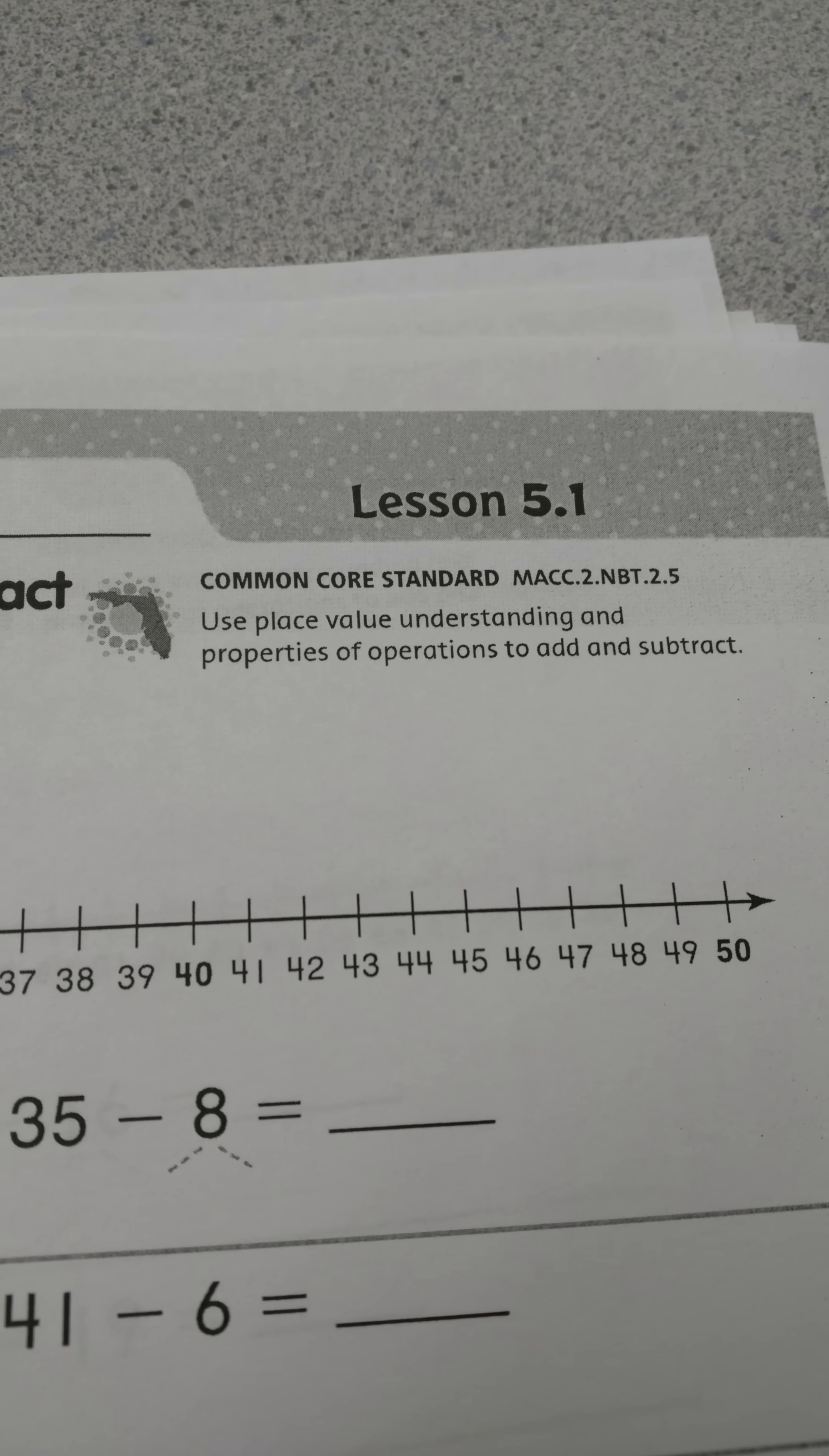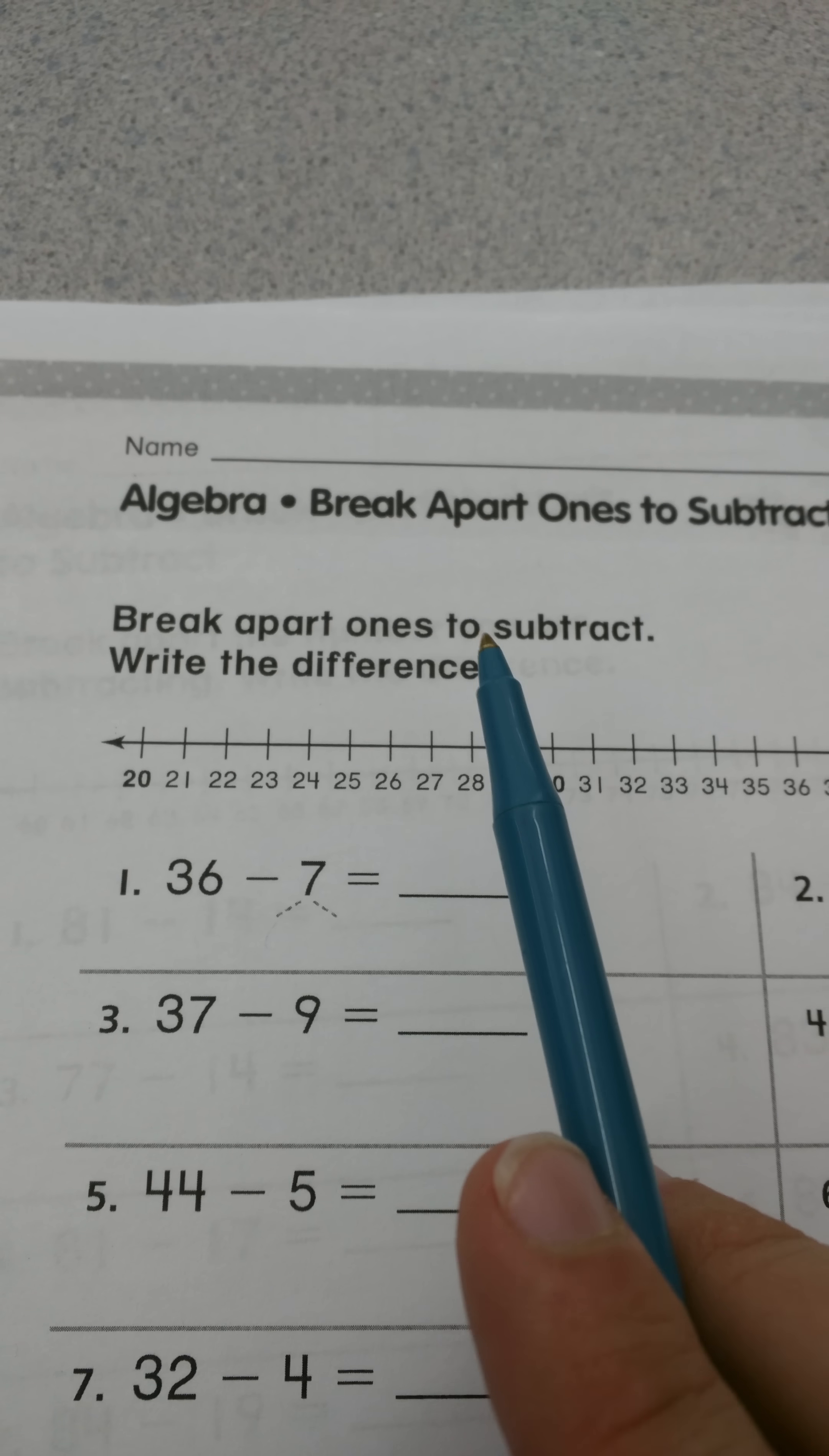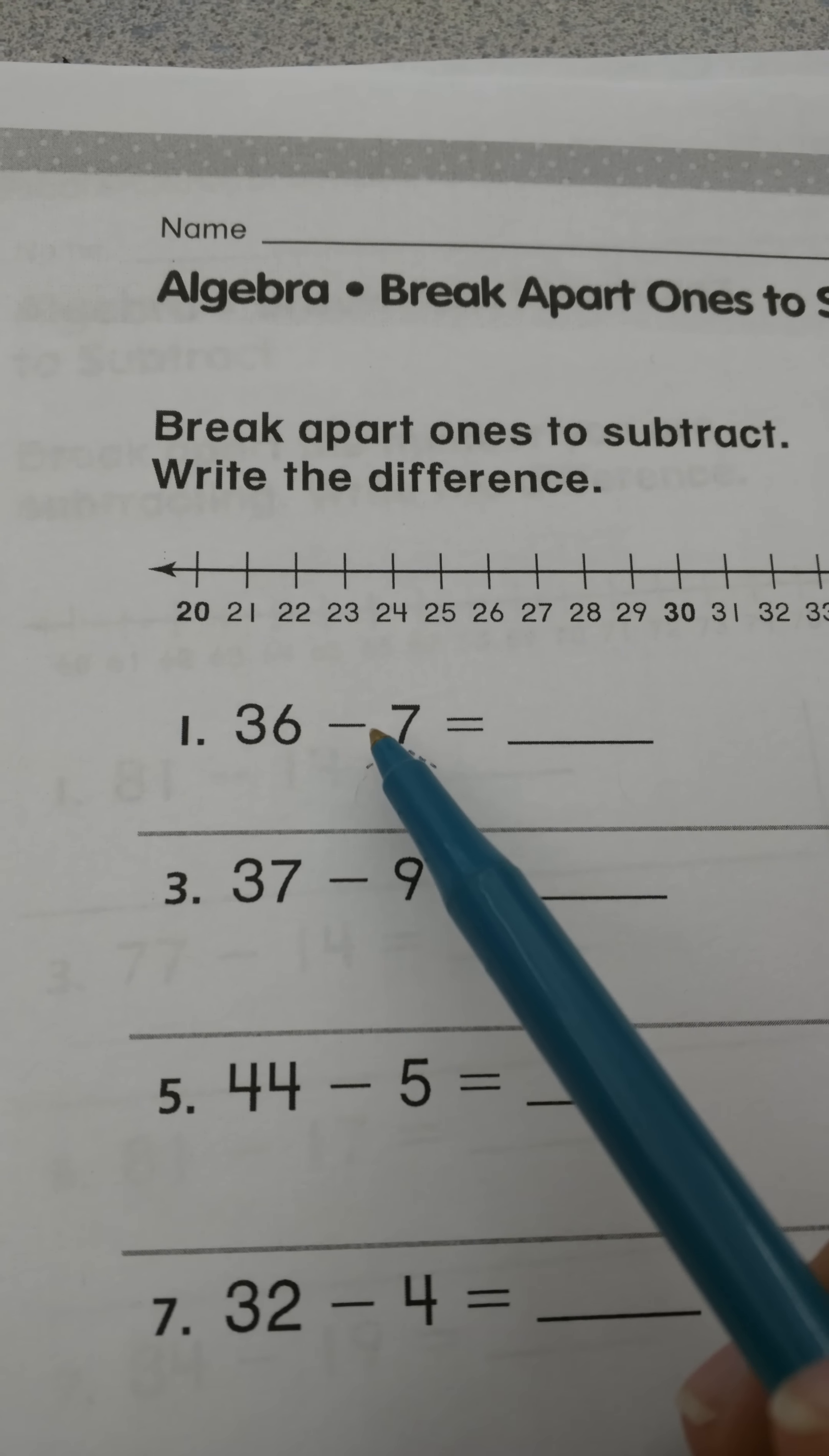This is second grade Go Math lesson 5.1 and today we're going to do algebra breaking apart ones to subtract. It says break apart ones to subtract, write the difference. So at the top here we have a number line which I'm going to show you something on and we also have our number sentences right here. So there we go, we got some focus.